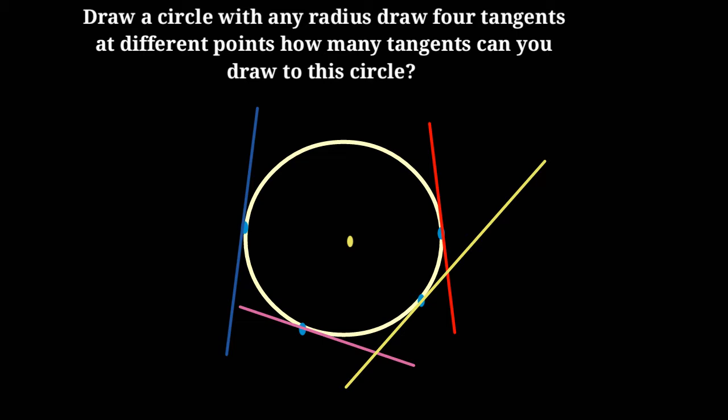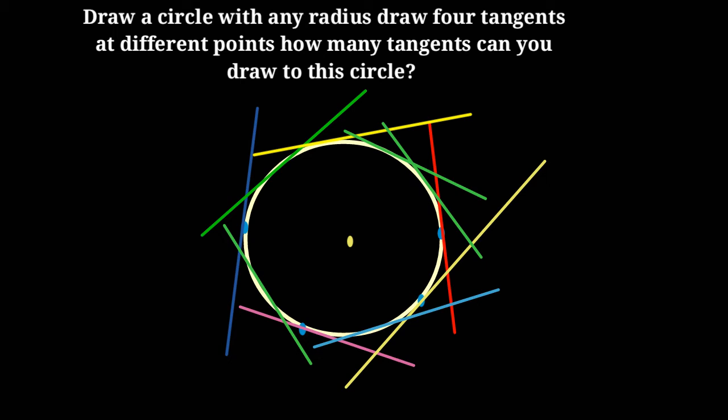From one point, we can draw only one tangent. In this way, you can draw a number of tangents on a circle.